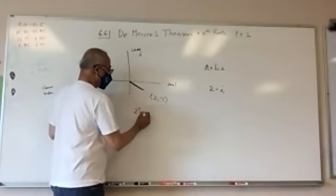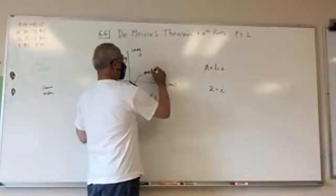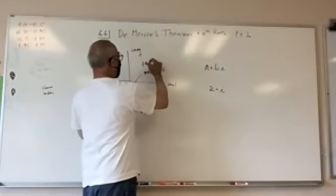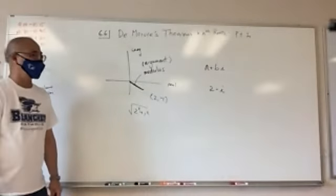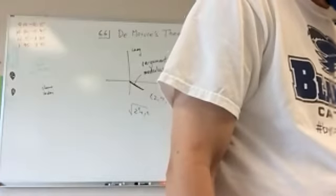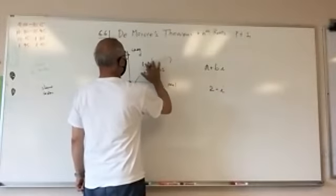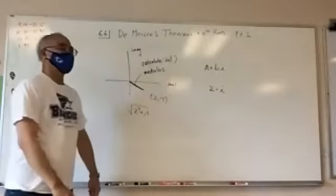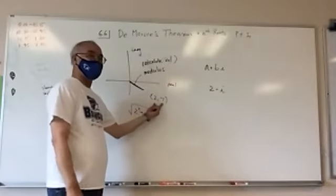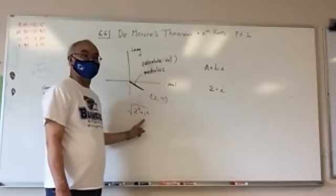As you would have guessed, we actually call this the modulus or the absolute value. Modulus or the absolute value. It's the same as if you had a real number — if you had a two and a negative one, the magnitude here you would have calculated the same way. It's exactly the same thing.